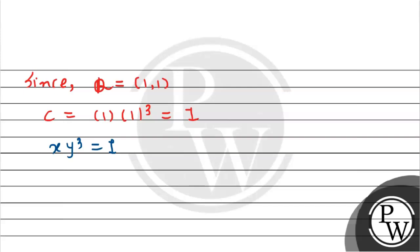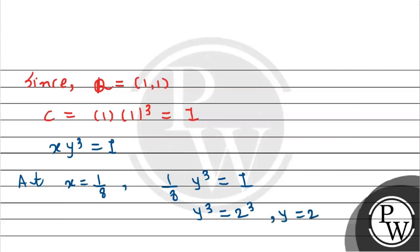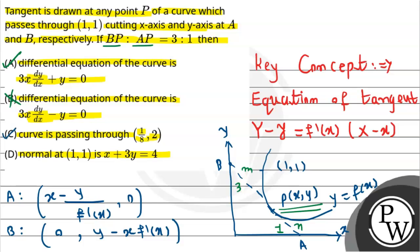Now we need to find out which point the curve passes through. Let x = 1/8 and substitute into x·y³ = 1: (1/8)·y³ = 1, so y³ = 8, which is the cube of 2, giving y = 2. This means the curve passes through the point (1/8, 2), so option C is also correct.